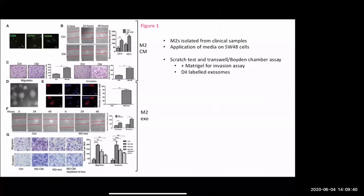Figure one, first figure - I've split it into two experiments. They cultured macrophages from clinical samples and applied the media onto SW48 cells. They did immunofluorescence to confirm the presence of macrophages using macrophage markers. They also did a scratch test - a wound healing assay where you scratch and cells move in, showing how fast they migrate. They showed that culture-media-treated cells travel a lot further, so they obviously have more migrating potential than cells with normal media.